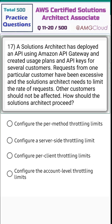Question 17. A solutions architect has deployed an API using Amazon API Gateway and created usage plans and API keys for several customers. Requests from one particular customer have been excessive and the solutions architect needs to limit the rate of requests. Other customers should not be affected. How should the solutions architect proceed?